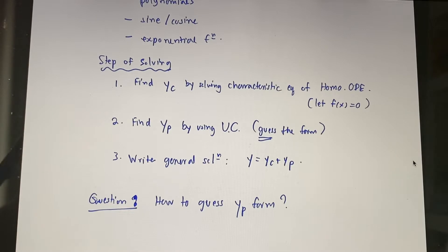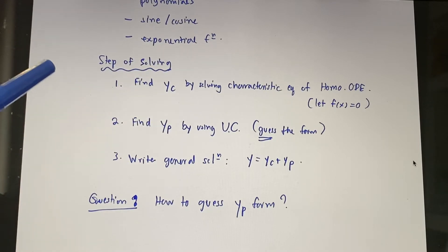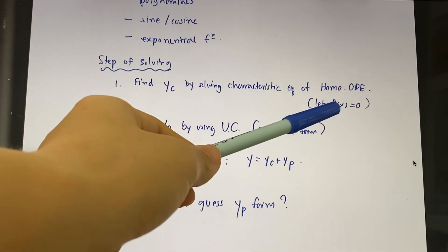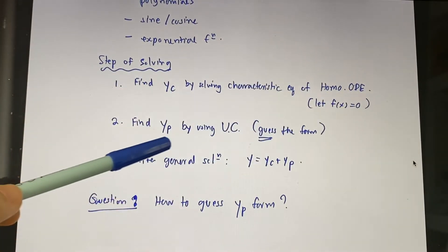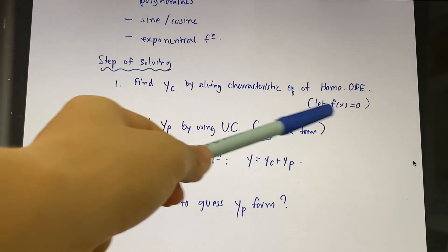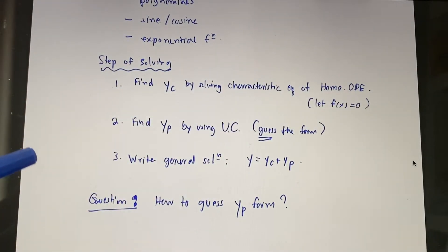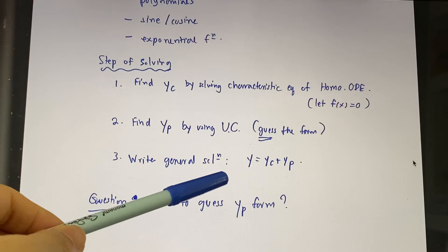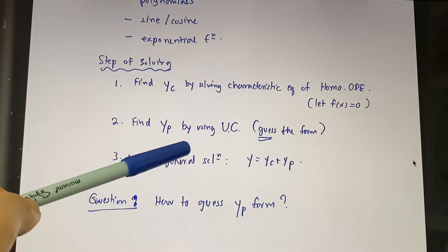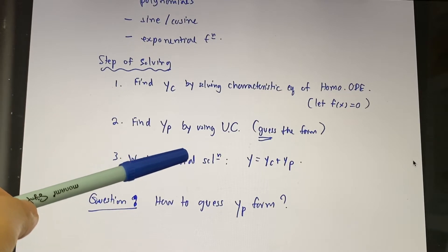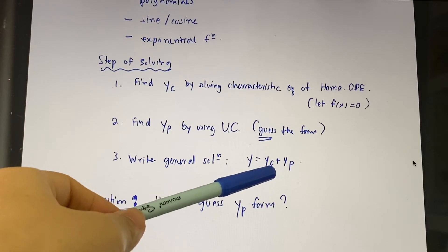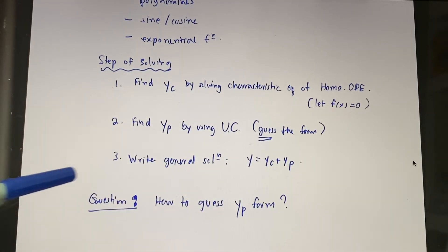I'll give you more detail about this. You need to guess the form of yp — the form depends on the function f(x). After that, you write the general solution, which equals yc plus yp, based on the superposition principle we discussed before.